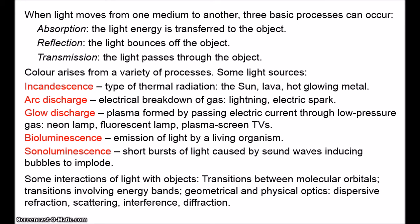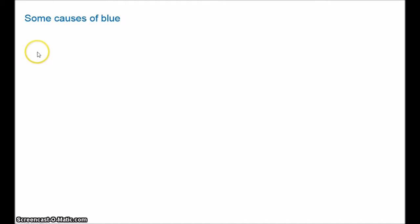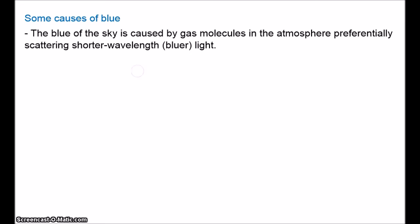Here are a few ways colour can arise through the interaction of light with objects. C.L. Hardin, in the book Colour for Philosophers, has a nice discussion of a few examples involving blue. The blue colour of the sky is caused by the scattering of light. Under a cloudless sky, the gas molecules in the atmosphere preferentially scatter short-wavelength light, which we see as blue.